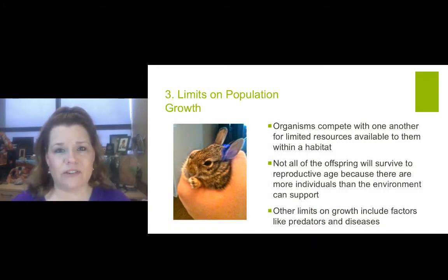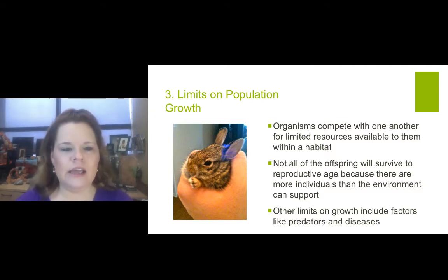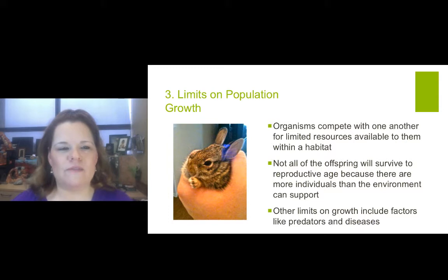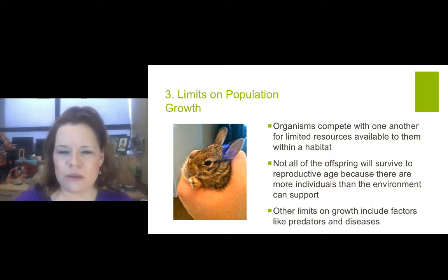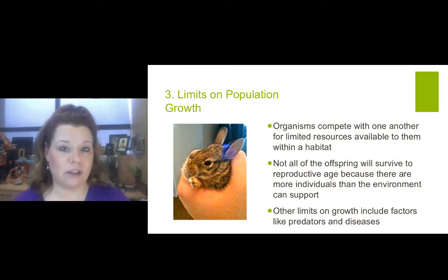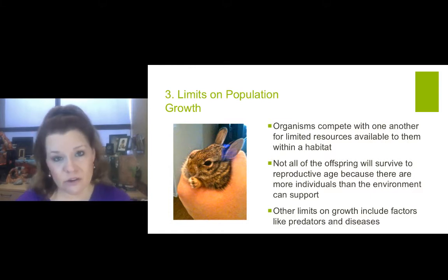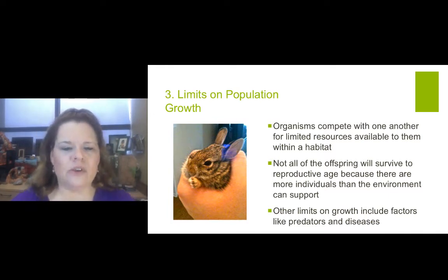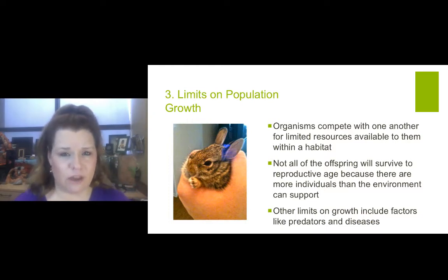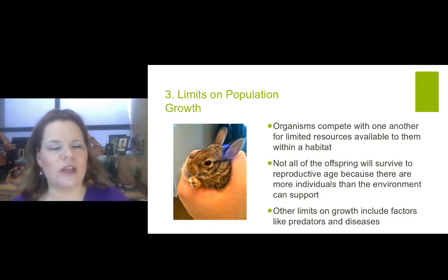Number three: limits on population growth. Brad lives in an area around Waco and he captured one of the bunnies on his property as an example. Organisms compete with one another for limited resources available within a habitat. Too many bunnies, not enough food resources — you're going to start to see a natural die-off without any intervention. Not all offspring will survive. If there are more individuals than the environment can support, some will die. Other limits on growth include factors like predators and diseases.